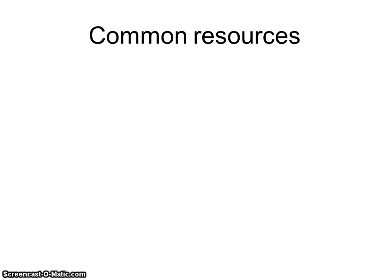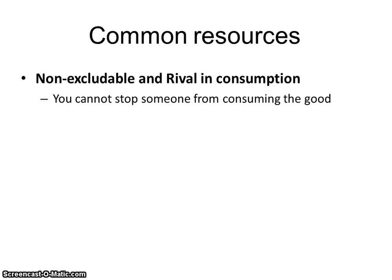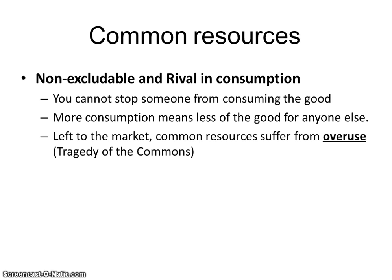We have two other categories to know about. Common resources have a combination of excludability and rivalry characteristics. Common resources are non-excludable but they are rival, meaning you cannot stop someone from consuming the good, but more consumption by one person means less of the good left over for someone else. And left to the market, common resources suffer from overuse — the economic technical term for this is tragedy of the commons. If the government doesn't step in and regulate usage for these common resources, they will be depleted.